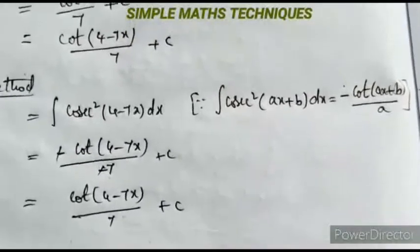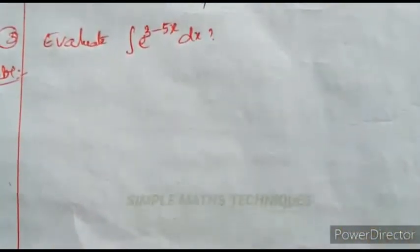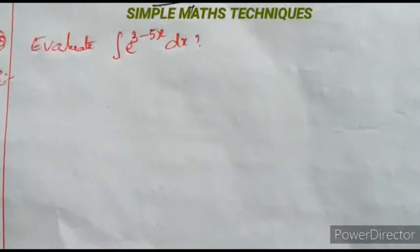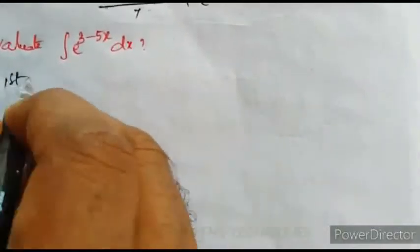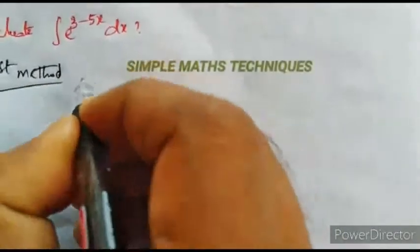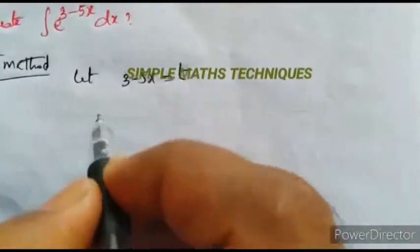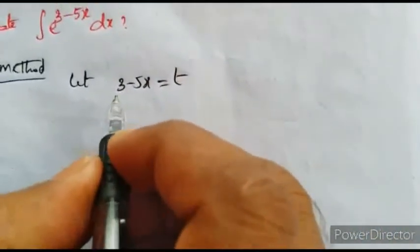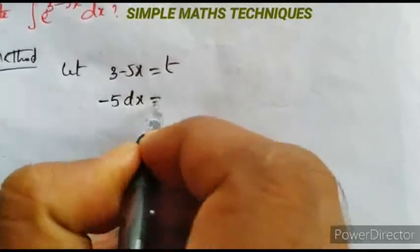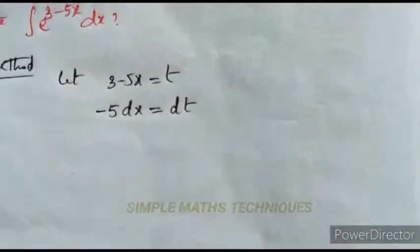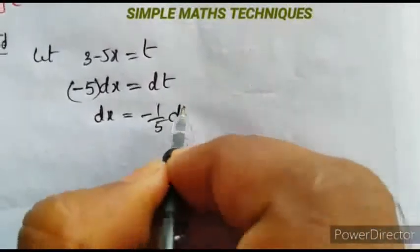The next problem: evaluate integration of e^(3-5x) dx. First method — substitution: let 3-5x = t. Differentiating both sides: 0 - 5 dx = dt, so dx = -1/5 dt.